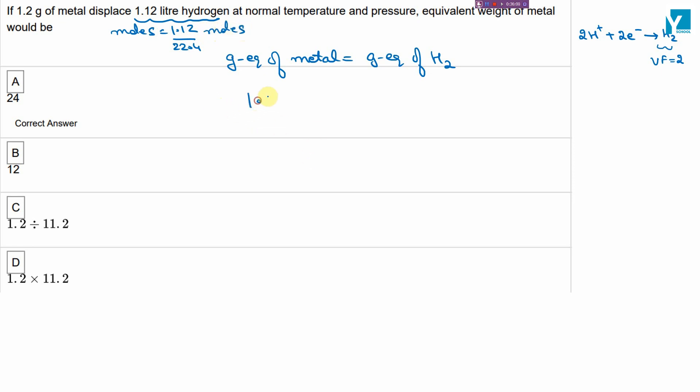Now gram equivalents of metal can be calculated as given mass of metal upon its equivalent mass. Gram equivalents of hydrogen can be calculated as valence factor into moles of hydrogen. Moles of hydrogen is 1.12 upon 22.4. So if you solve it, the equivalent weight of the metal will come out to be 12. So B part would be your answer and not A.